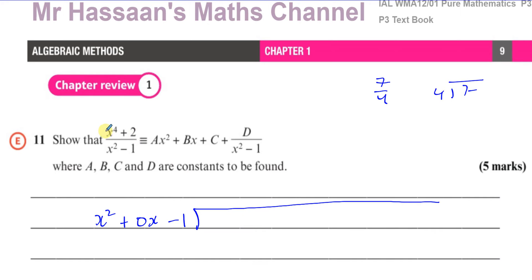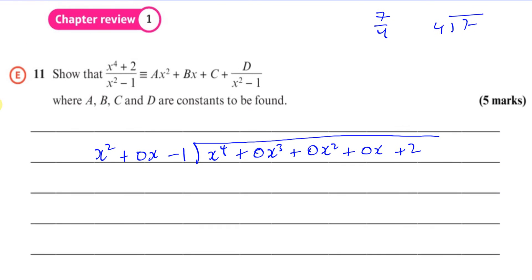And for the next one, you've got x to the power of 4, then you've got a constant. So there's a lot missing here. So you've got x to the power of 4, plus 0x to the power of 3, plus 0x squared, plus 0x, and plus 2. Doing this will keep everything under the right term. So when we're doing the subtractions, it will make life a lot easier.